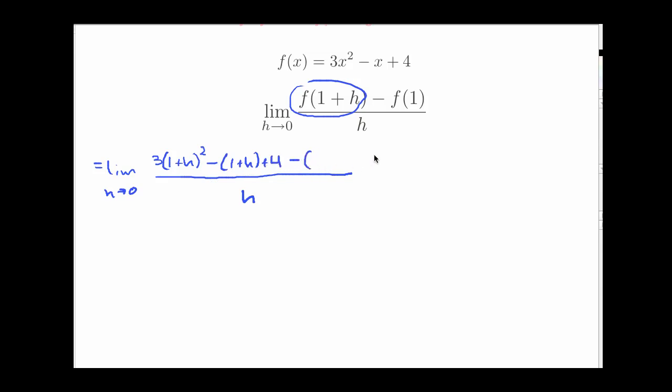That's f(1+h). Now I'm going to subtract, and make sure you group these off otherwise the signs might get messed up. f(1) which is 3 times 1 squared minus 1 plus 4. Okay so far so good.